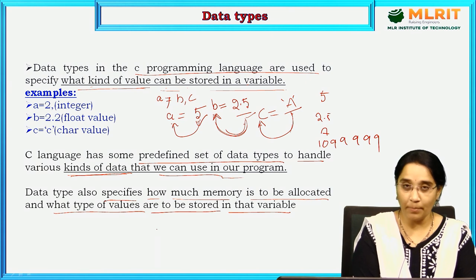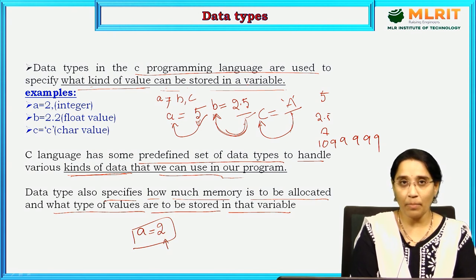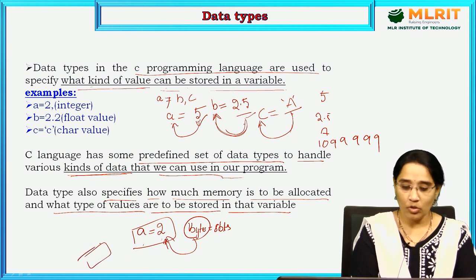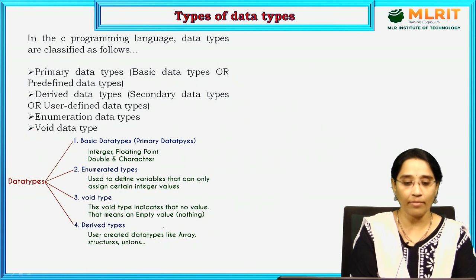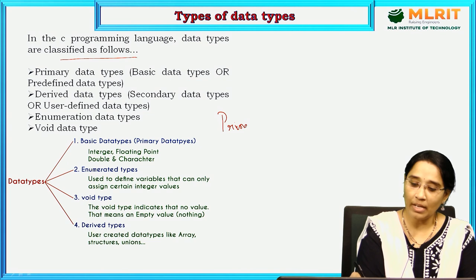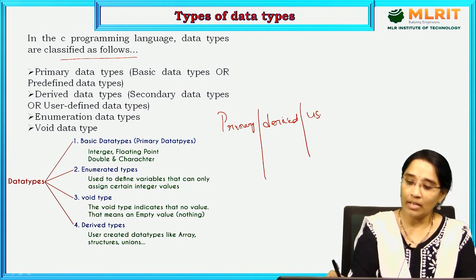How much memory to be allocated? In the same example, if A equals 2, how many bytes will the memory manager reserve for variable A? We all know 1 byte equals 8 bits. In C programming language, data types are generally classified into 3 categories: primary, derived, and user-defined.